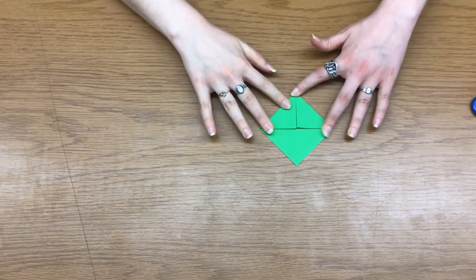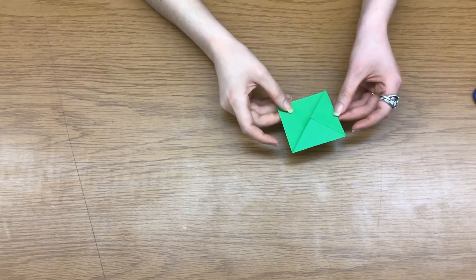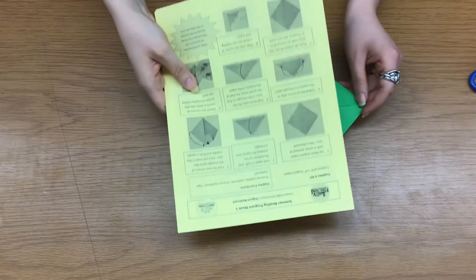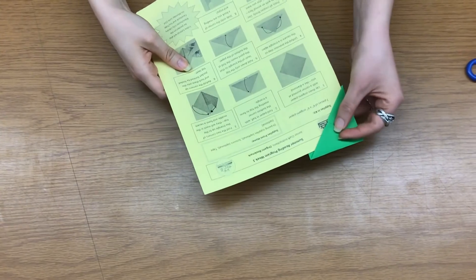Let's tuck that in and then here we have a corner bookmark. So pretend like our instruction sheet is a book. You would just put it on the corner to mark your place.